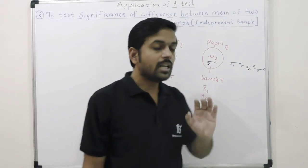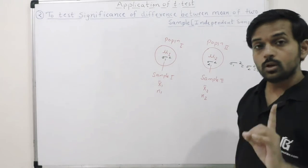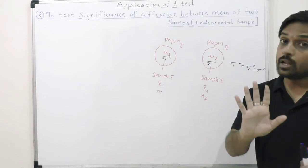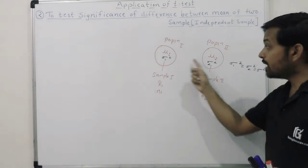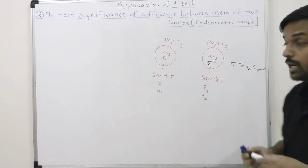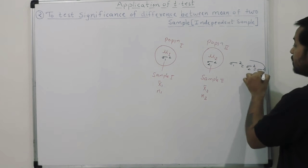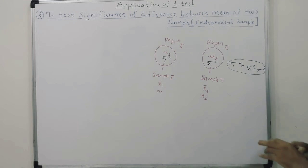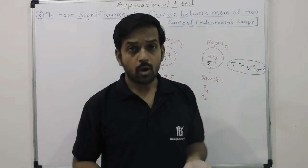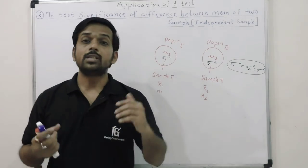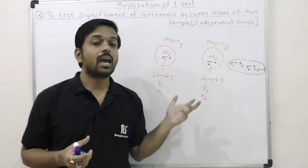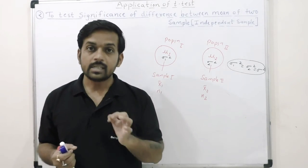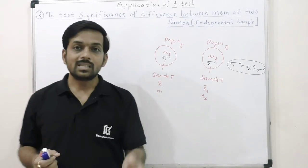Basically, the standard deviation of the population is unknown. We say the variance of population one and population two are unknown but assumed equal for practical purposes. When two samples are taken from different populations, and we want to check the average of those samples, we apply the t-test for independent samples when the sample size is small.